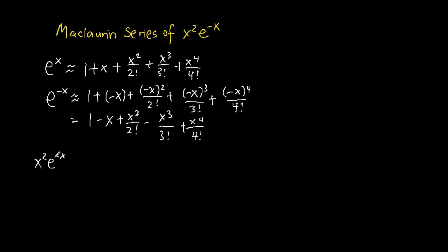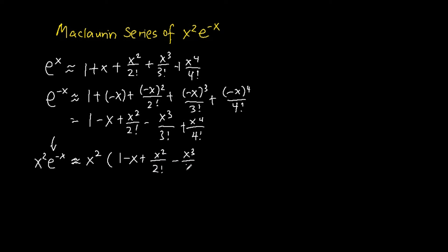Once we are able to find the Maclaurin series of e to the power of negative x, we can substitute it into the e to the power of negative x in the function x squared e to the power of negative x. So this gives us x squared bracket 1 minus x plus x squared over 2 factorial, subtracting away x cubed over 3 factorial plus x to the power of 4 over 4 factorial.